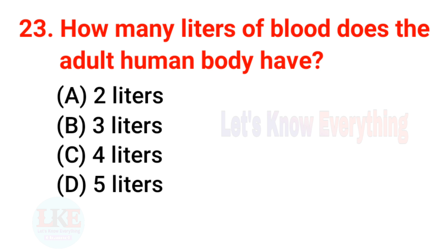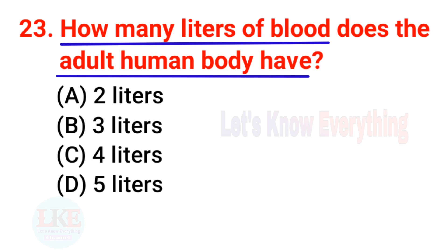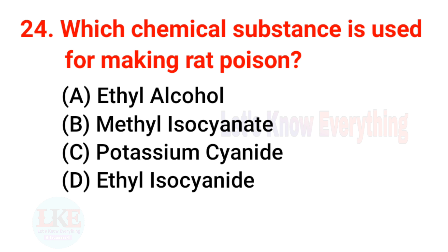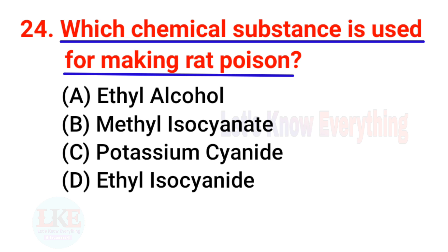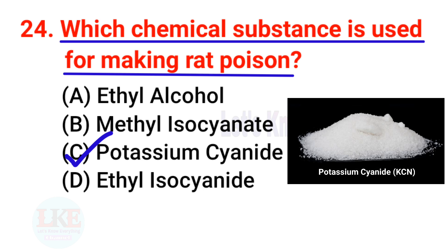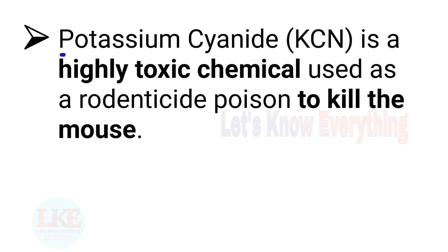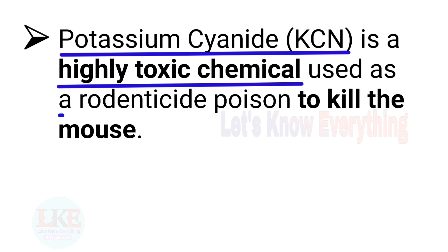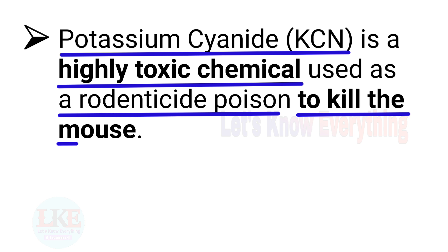Question number 23: how many liters of blood does the adult human body have? Right answer, option D: 5 liters. Question number 24: which chemical substance is used for making rat poison? Right answer, option C: potassium cyanide. KCN is a highly toxic chemical used as a rodenticide.